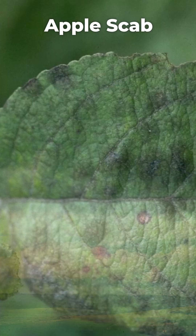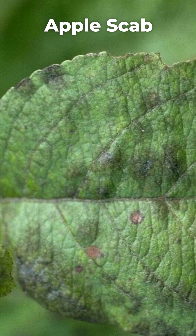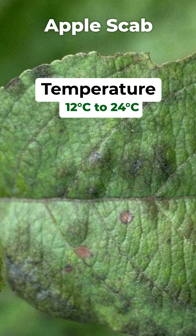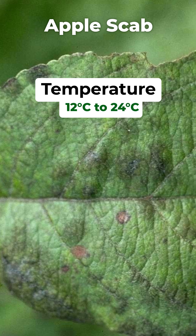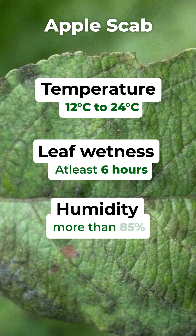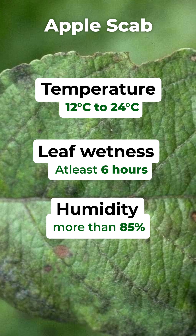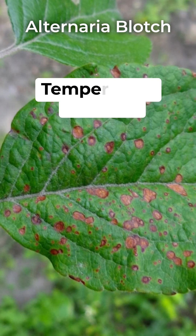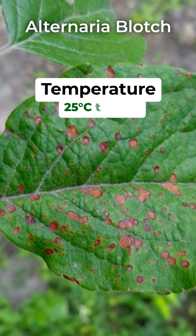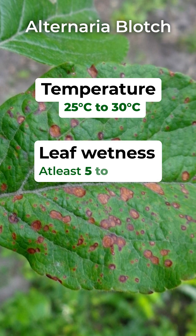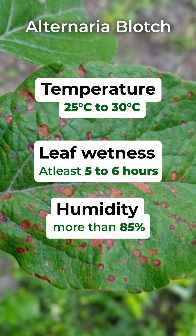For apple scab to develop, the optimum weather conditions include temperature between 12 to 24 degrees Celsius, at least 6 hours of leaf wetness, and humidity above 90%. Similarly, for alternaria blotch, temperature ranges between 25 to 30 degrees Celsius, at least 5 to 6 hours of leaf wetness, and humidity of more than 85%.